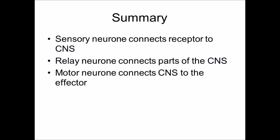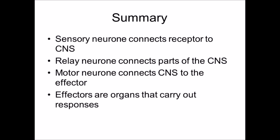You then have motor neurons and those connect the central nervous system to an effector and an effector is an organ which carries out a response, something like a muscle or a gland. And the synapses which are the gaps between the neurons and we'll come on and look at those in the next video.